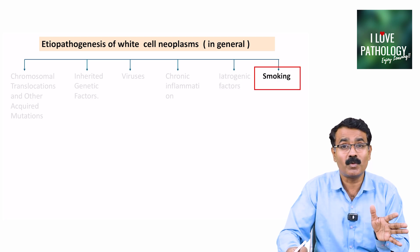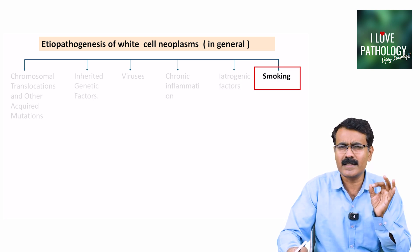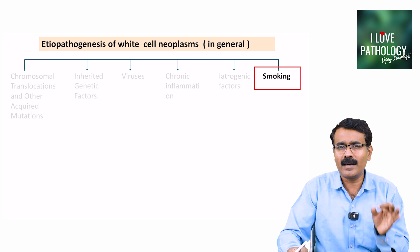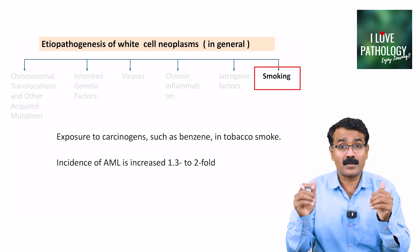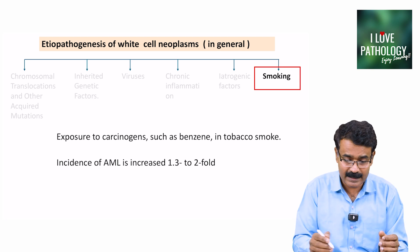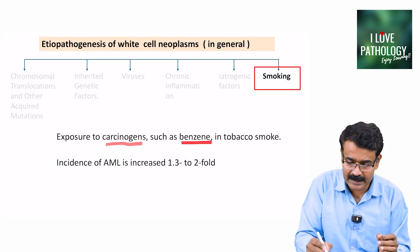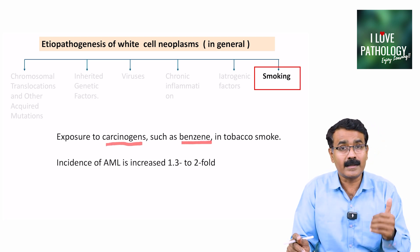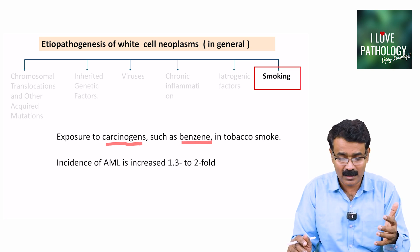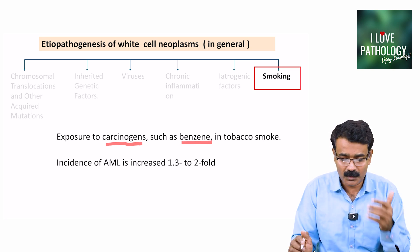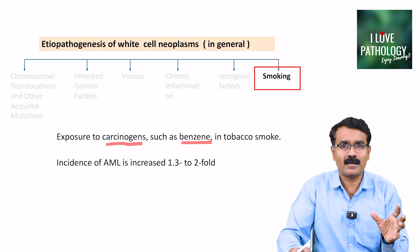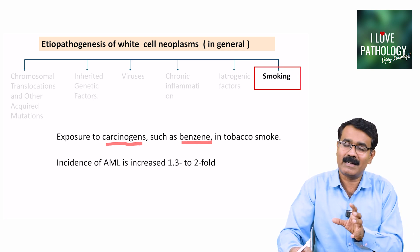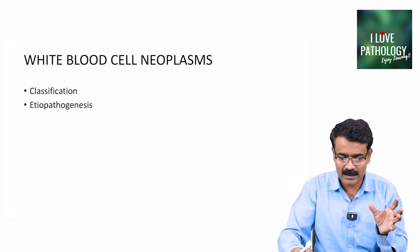Lastly, smoking is an important independent risk factor for the development of leukemias and lymphomas, because tobacco smoke contains carcinogens such as benzene. The increase in incidence of acute myeloid leukemia in smokers is 1.3 to 2-fold.